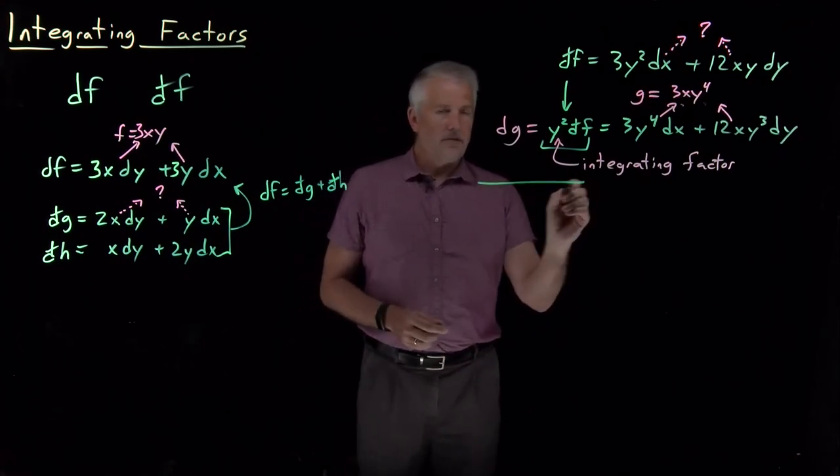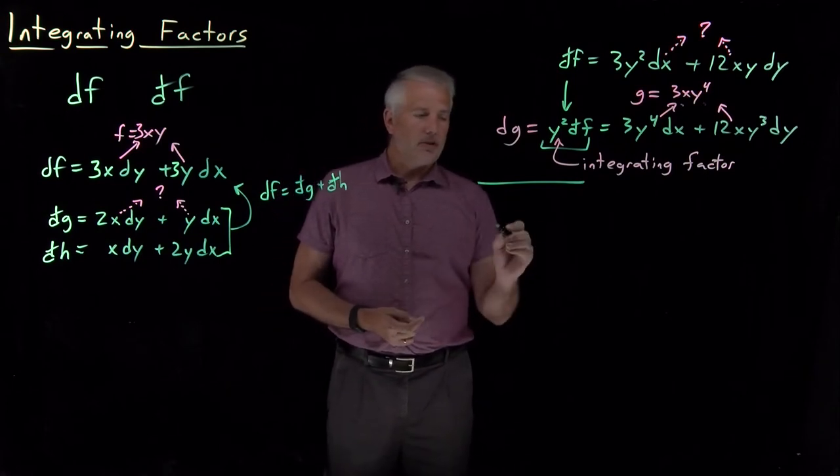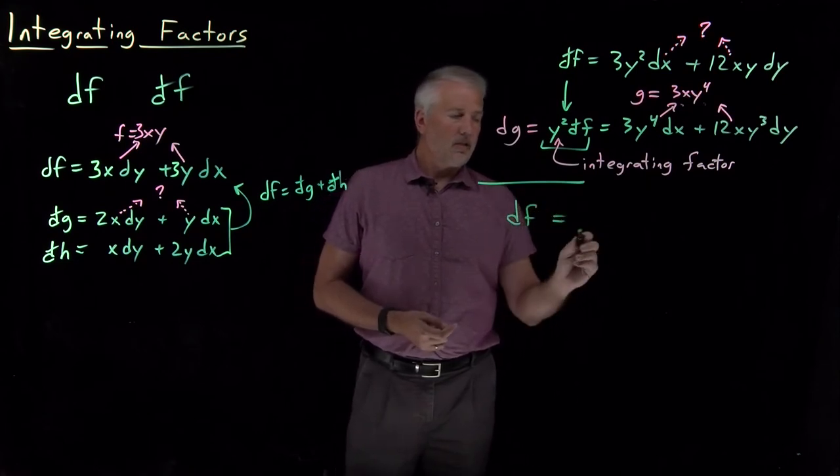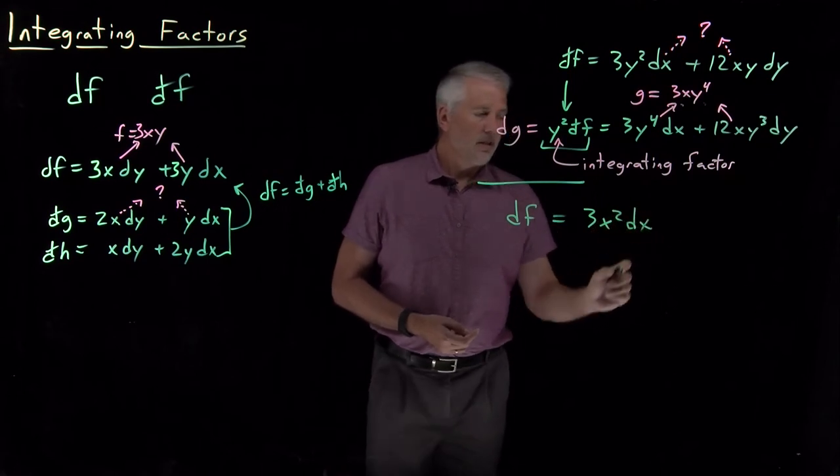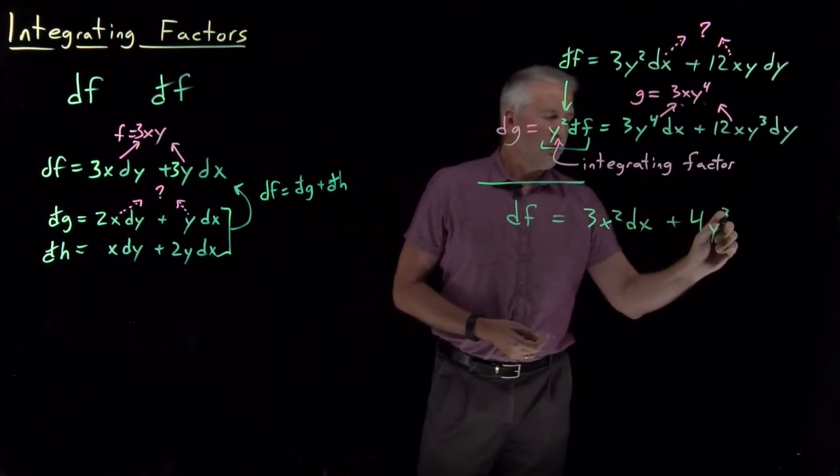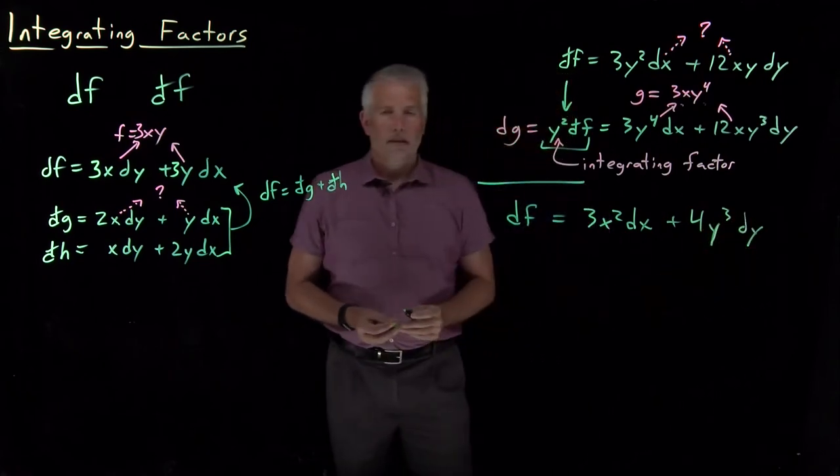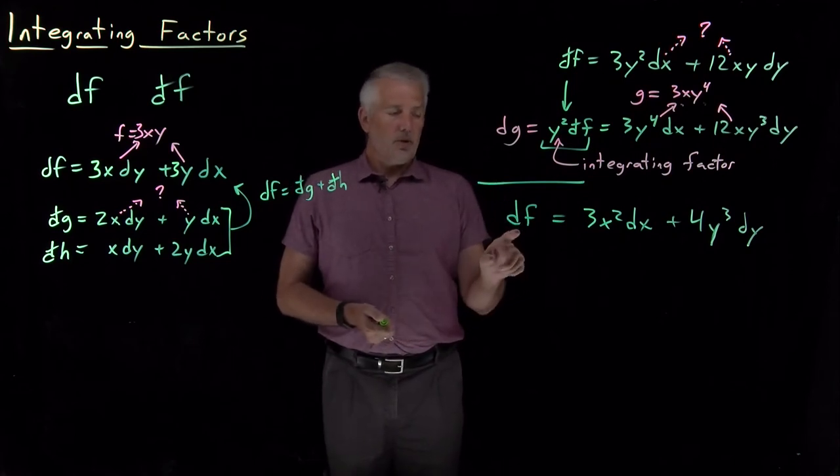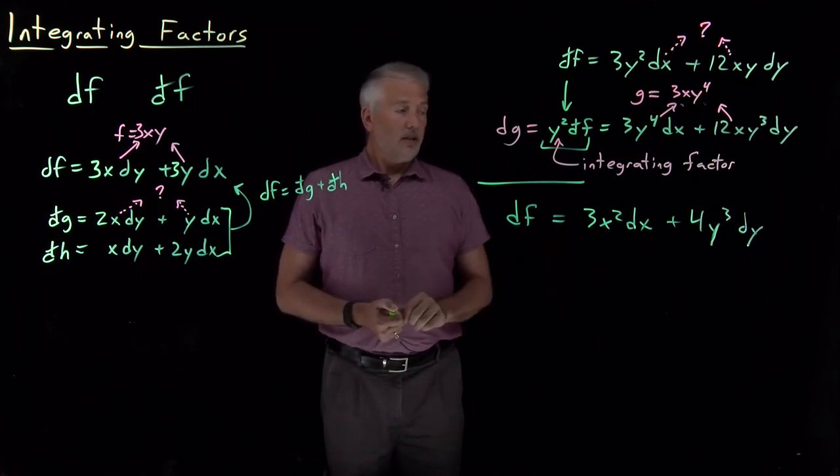And as a final example of being able to recognize when something is an exact or an inexact differential, let's take a case like, let's say, 3x squared dx and 4y cubed dy. And I'm asking, I've labeled it df, but I'm asking, do you know whether this would be an exact or an inexact differential?